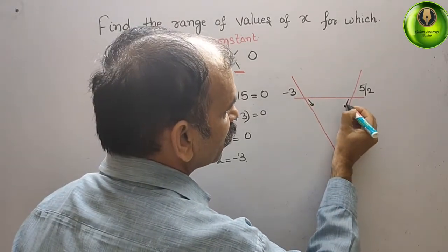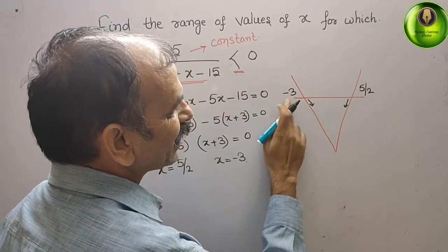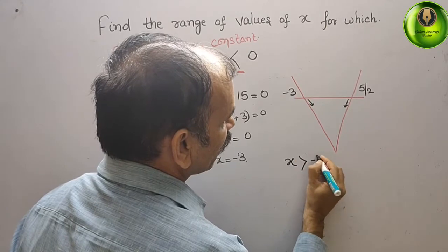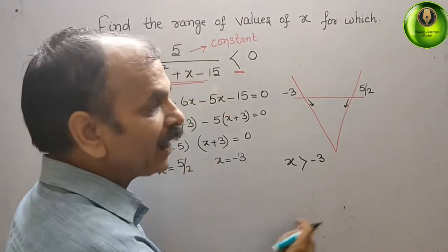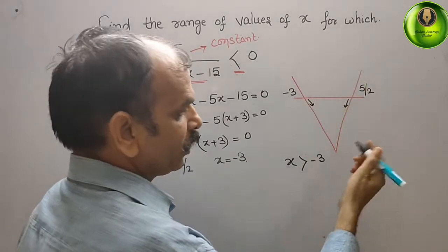So here it comes again here. So therefore we can say, x is greater than -3, greater than -3, and here comes x is less than 5/2.